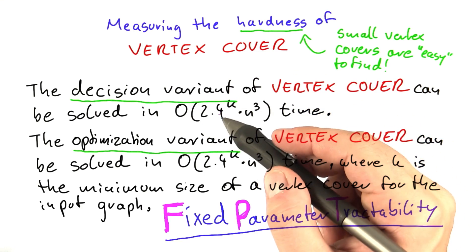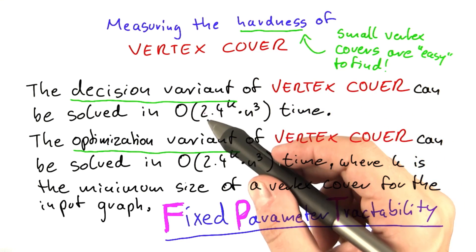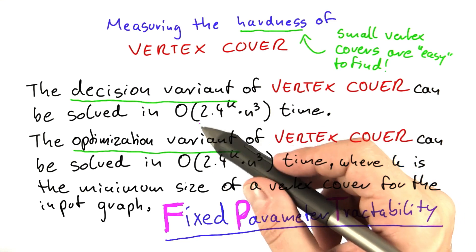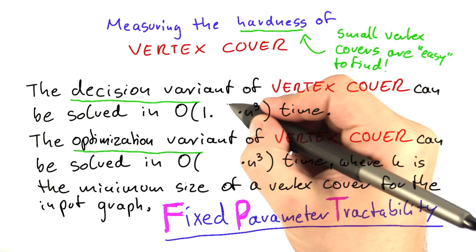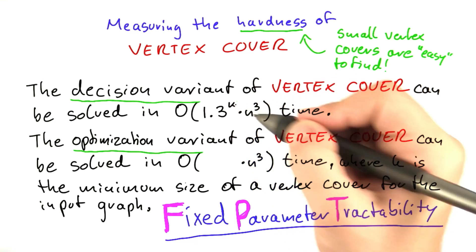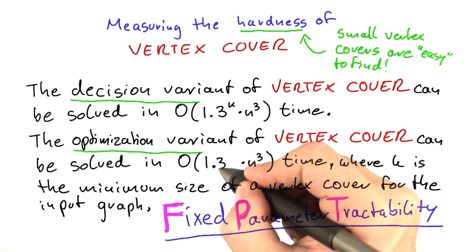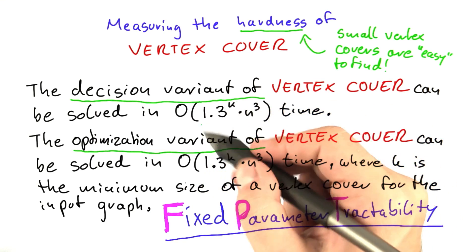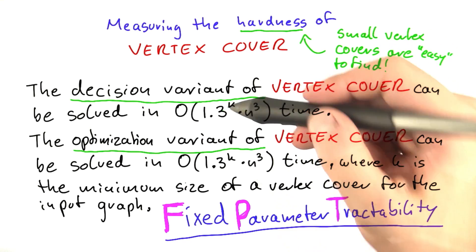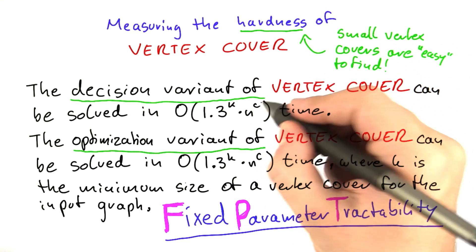Actually 2.4^k is a very bad exponent here. We only did that because it was easier to explain the problem that way. The currently best algorithms have an exponential factor of about 1.3^k. The current state of the art is that you can solve vertex cover in 1.3^k times some polynomial time.